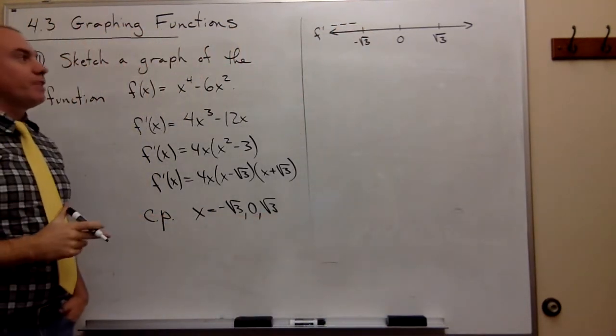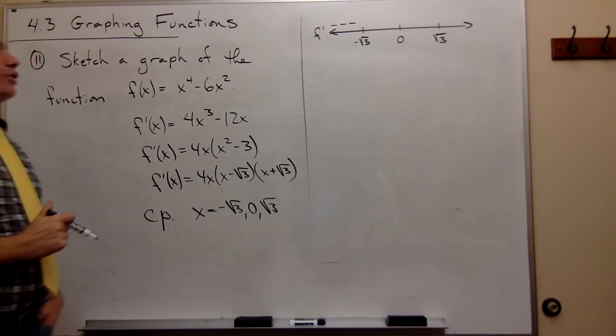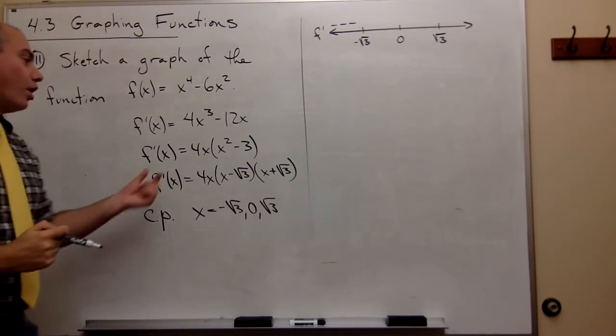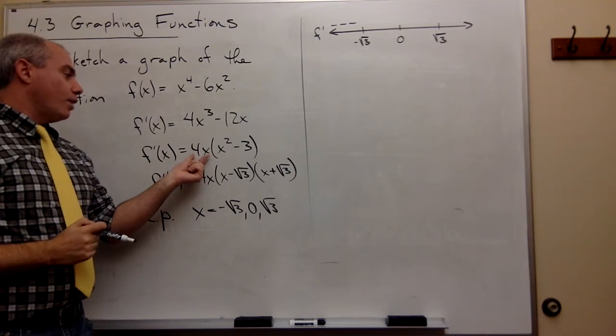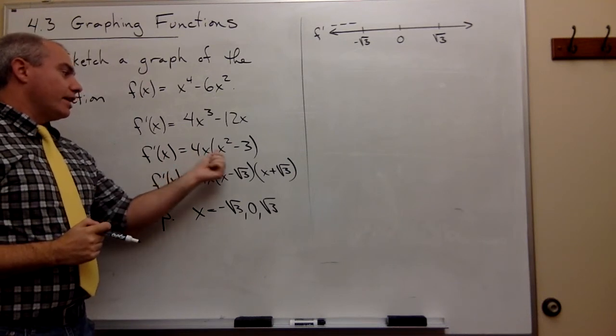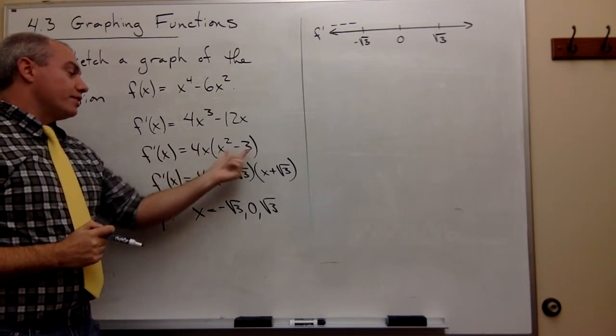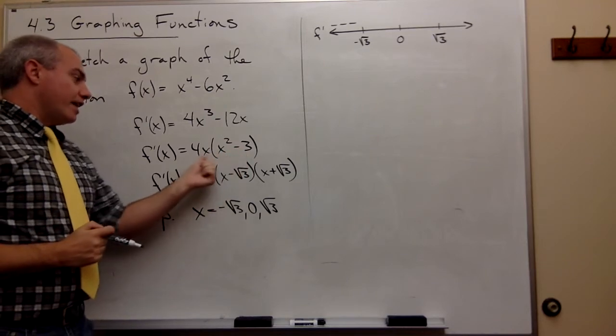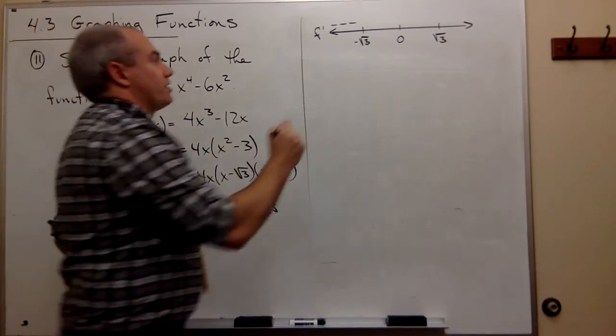Let's plug in something in between negative root 3 and 0. How about negative 1? If I plug in negative 1, I get a negative here. And I get negative 1 squared is 1 minus 3. That's a negative here. So a negative times a negative is a positive.